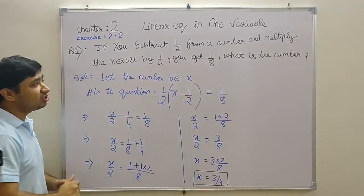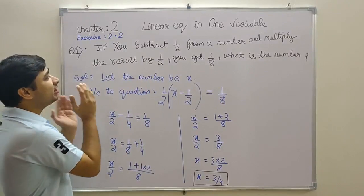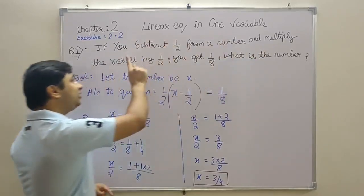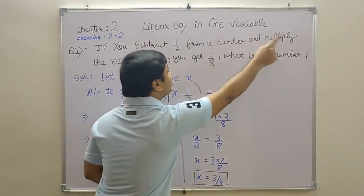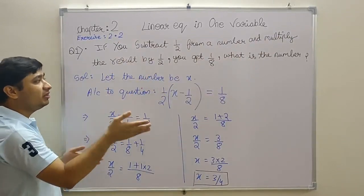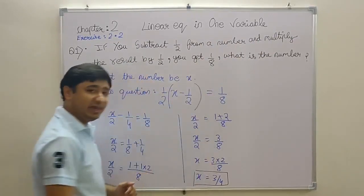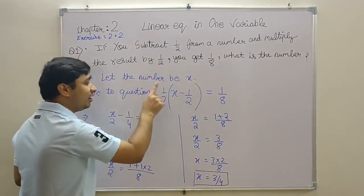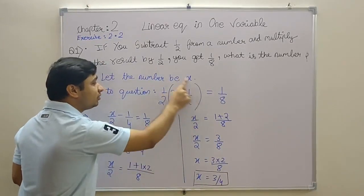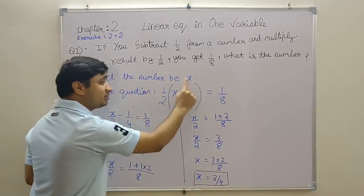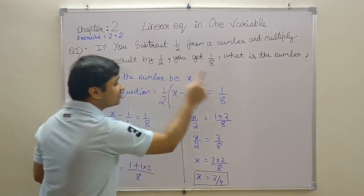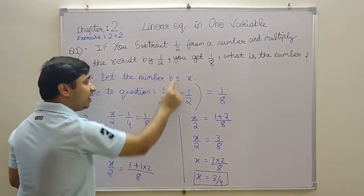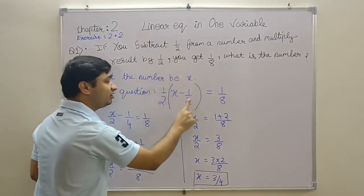Question 1: If you subtract 1/2 from a number and multiply the result by 1/2, you get 1/8. What is the number? The question says let's take a number and multiply by 1/2, then the answer equals 1/8. So let's take a number x. According to the question, we subtract 1/2 from x and multiply by 1/2 in brackets, and the resultant is equal to 1/8.